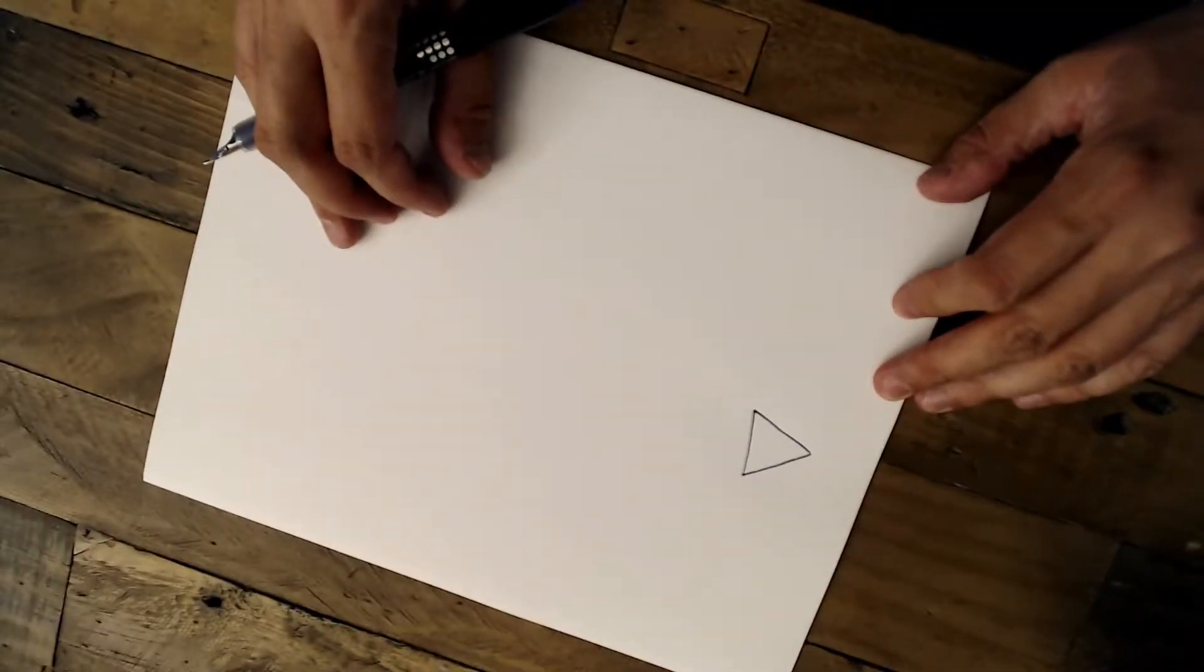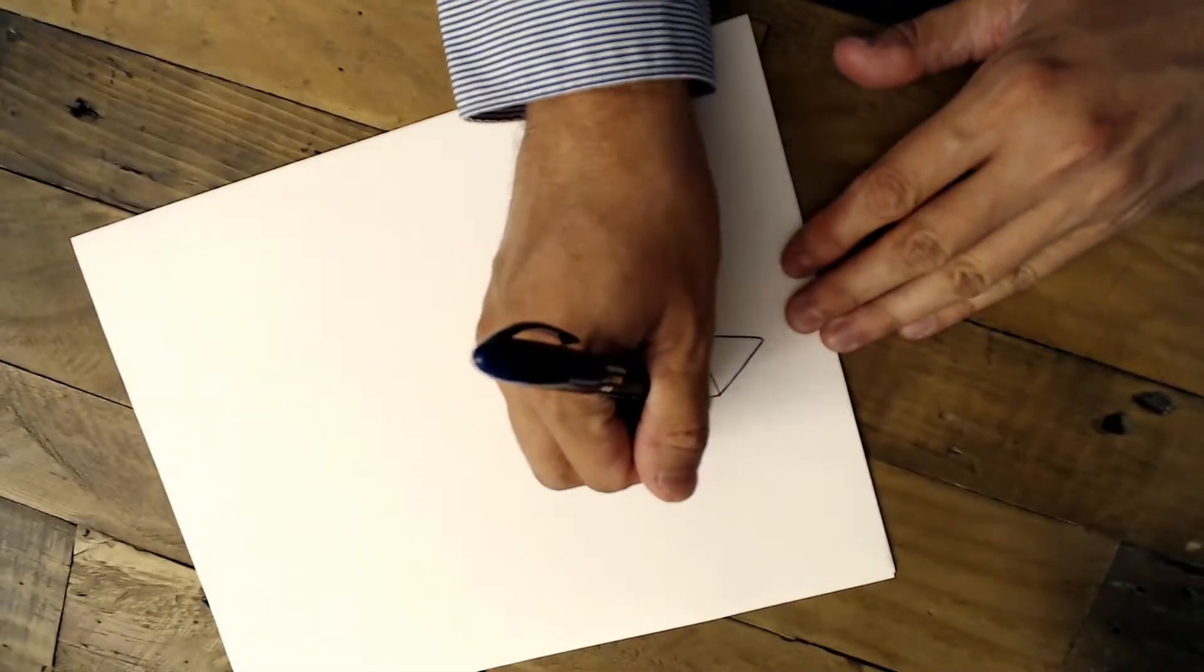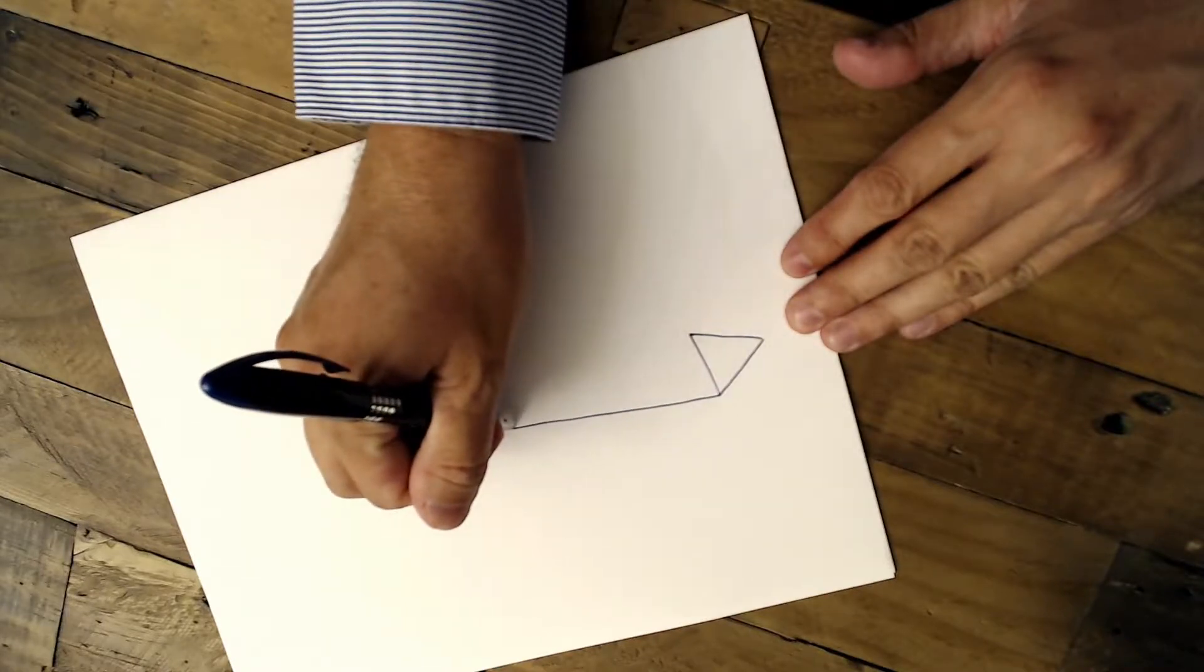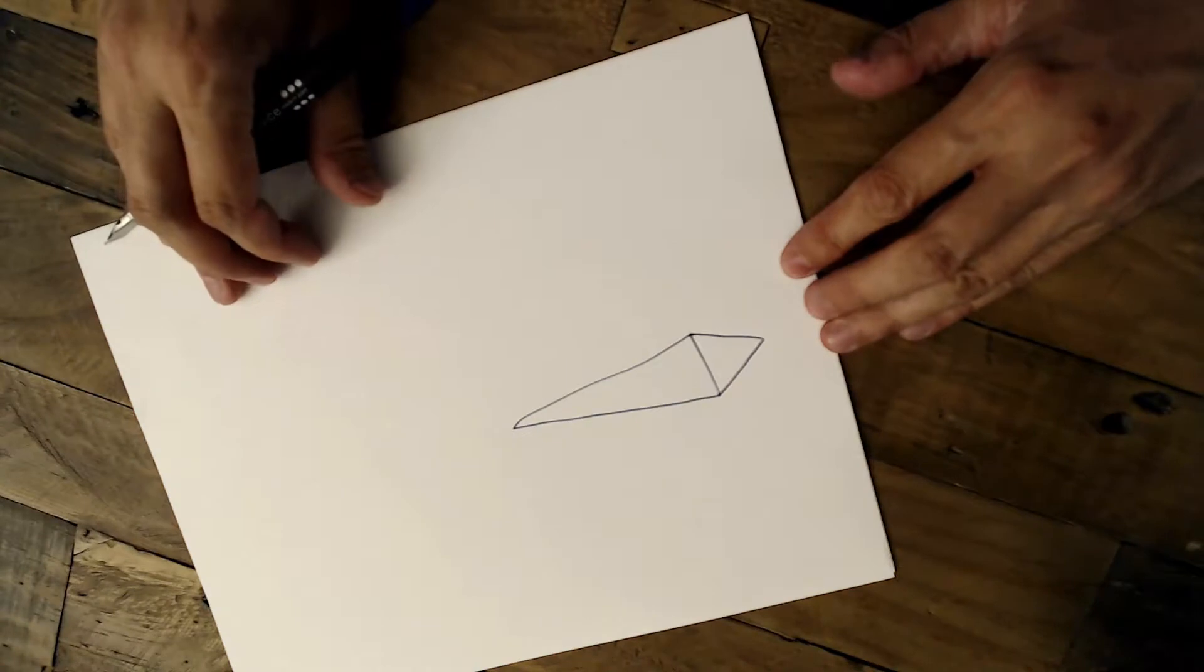The next thing you're going to do is add one long triangle to make the body. I'm going to turn it like this. So now I have his body.